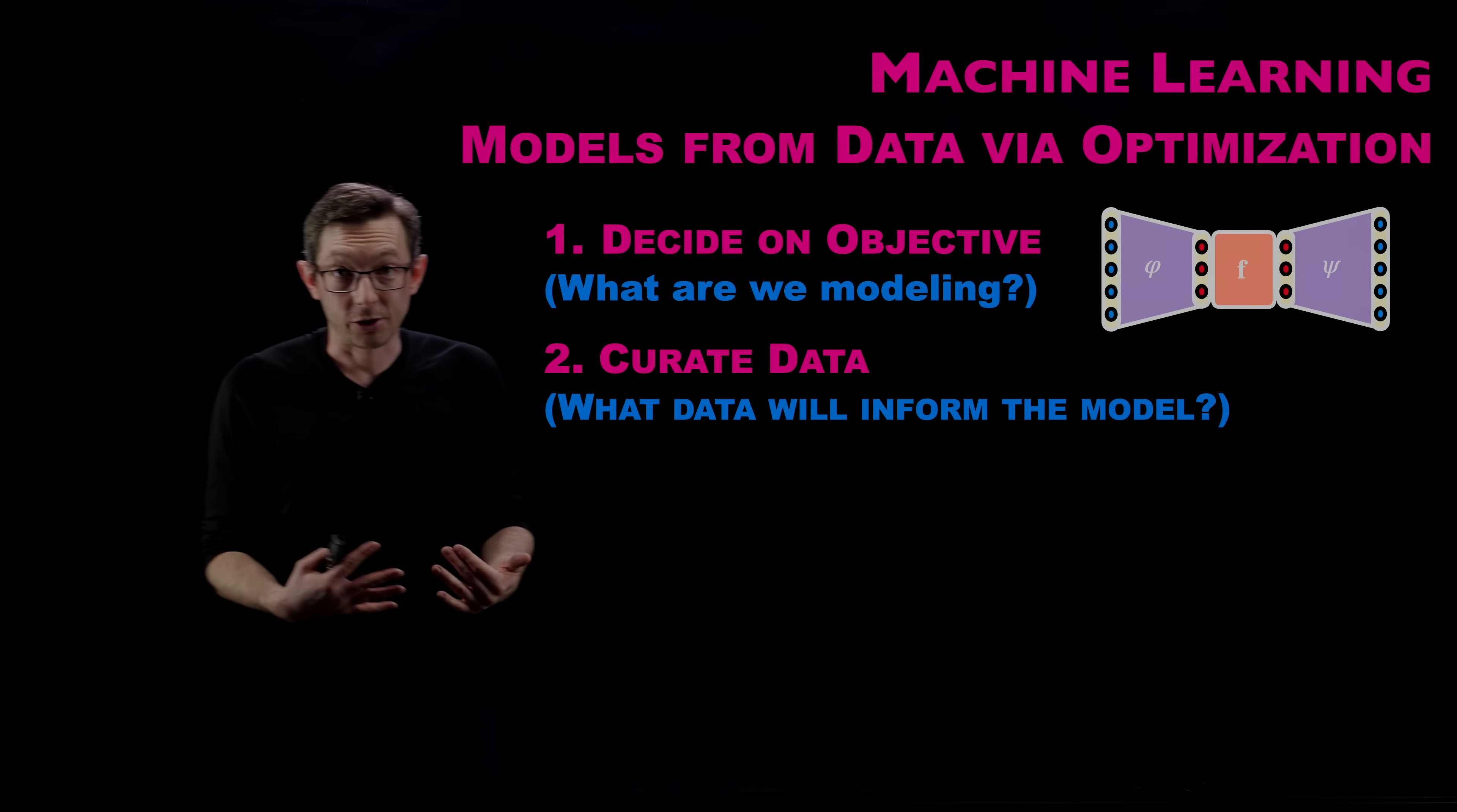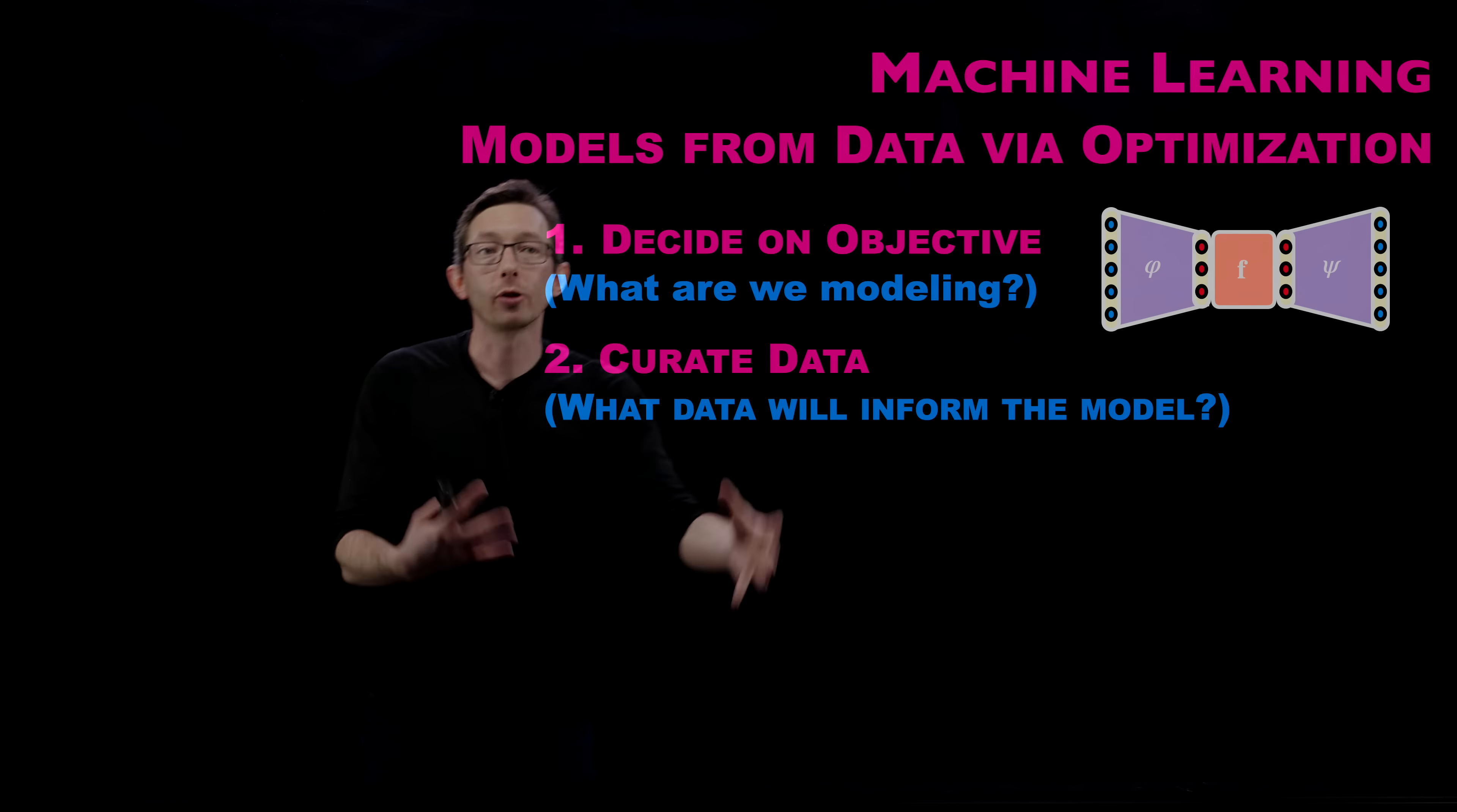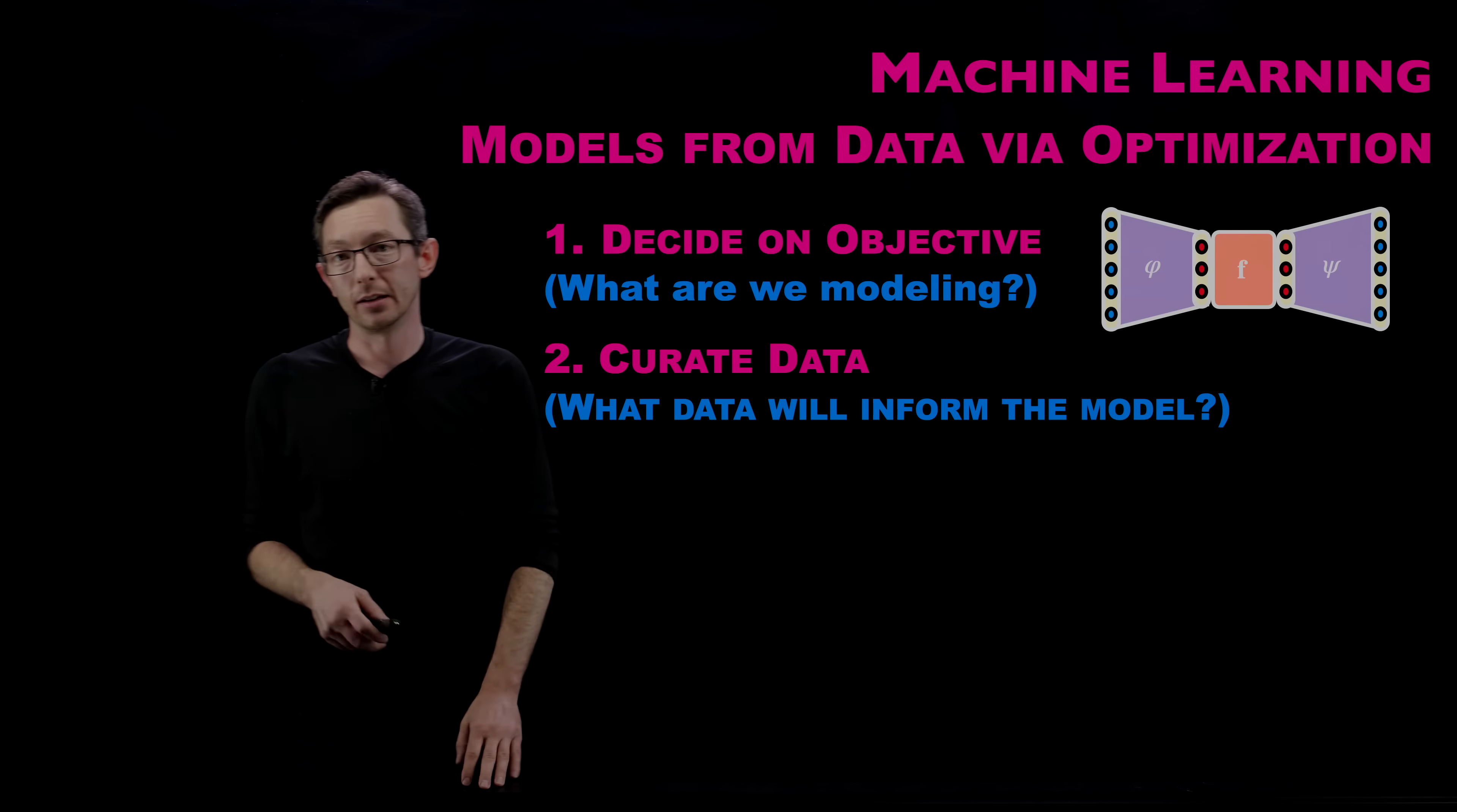The second piece of this training is you have to get training data. It's not machine learning if you're not building this model from training data. So what data will inform the model? What training data do you have access to? Is it labeled or not? Does it have the output of the function that you're looking for? What is the data I'm going to use here?